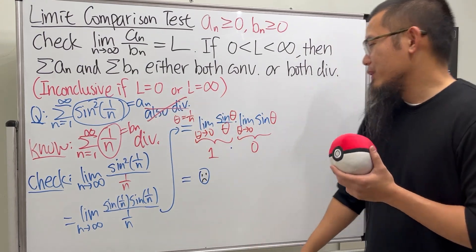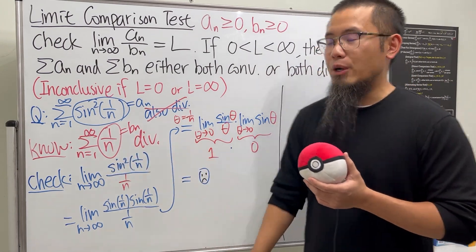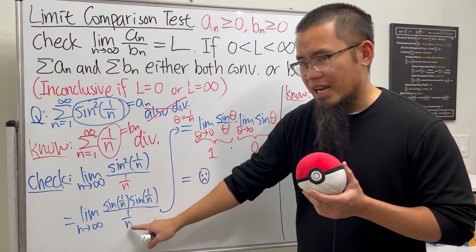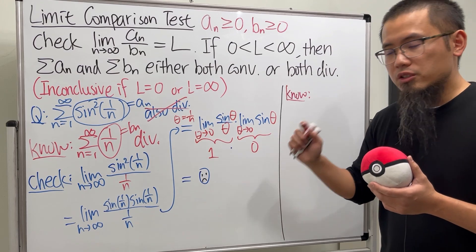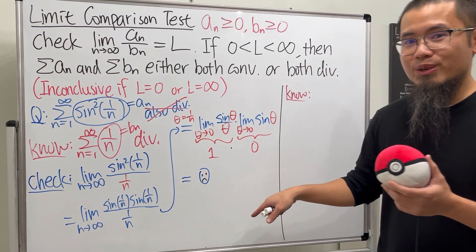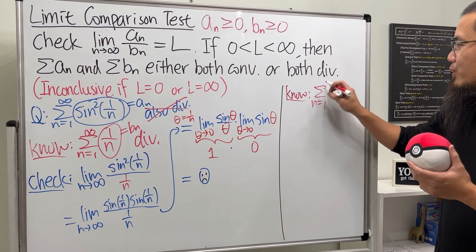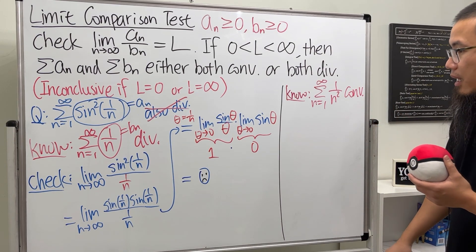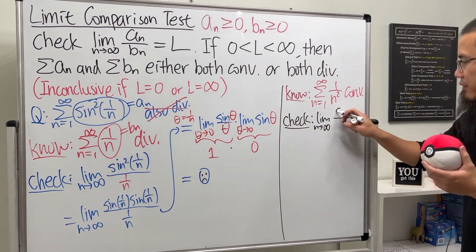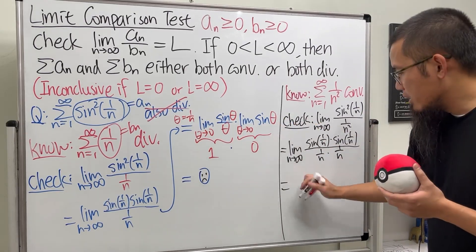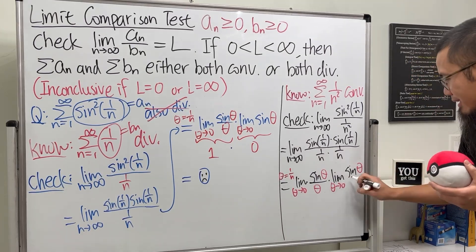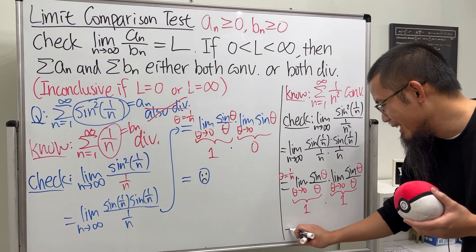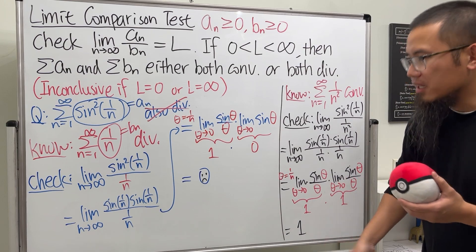So how do we handle this correctly? Instead of using 1/n as our comparison series, we use 1/n². Notice that sin(1/n) over 1/n gives a limit of one, but there's an extra sin(1/n) factor giving a zero. With 1/n² in the denominator, both factors of sin(1/n)/(1/n) each contribute a limit of one. So we use the series from n equals one to infinity of 1/n², which is a p-series with p equal to two — and it converges.